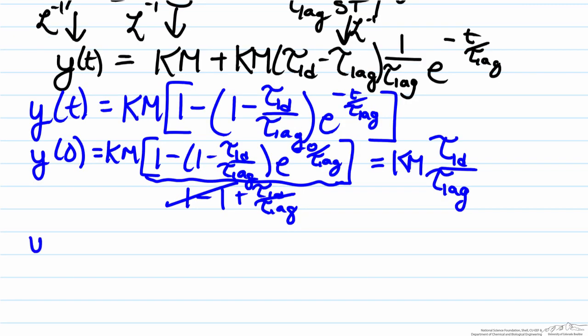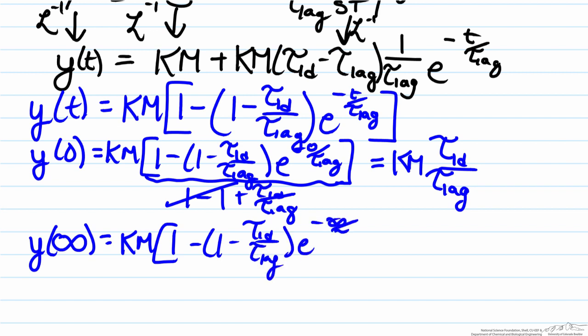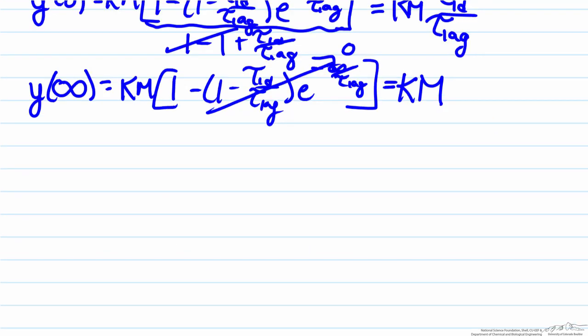Now we will evaluate the system as y approaches infinity to figure out where it will end up. If we substitute in infinity for time, what that will mean is the fact that the exponential goes to zero, meaning that this whole second term will go to zero. That means the fact that this system will converge in the end to km.